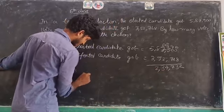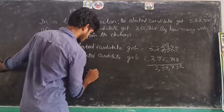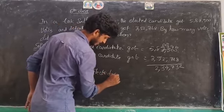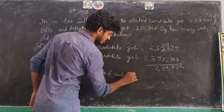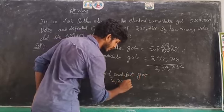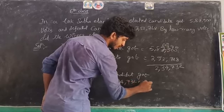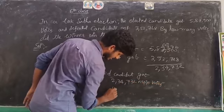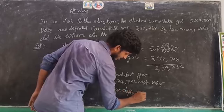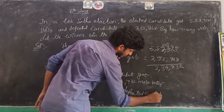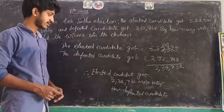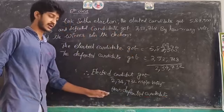Therefore, the elected candidate got 2,34,732 more votes than the defeated candidate.